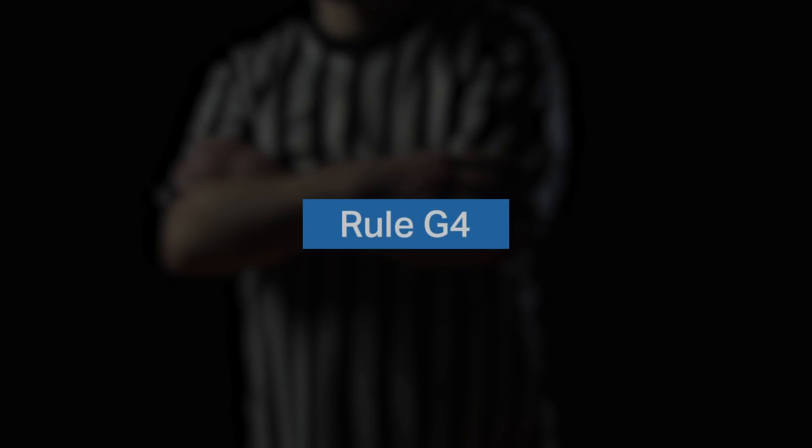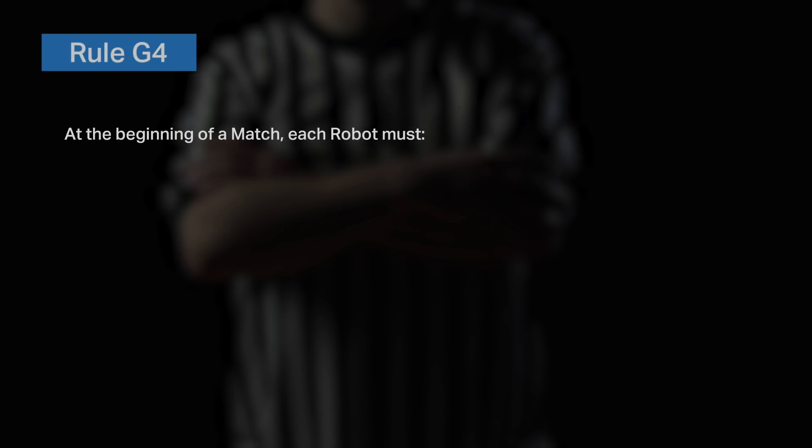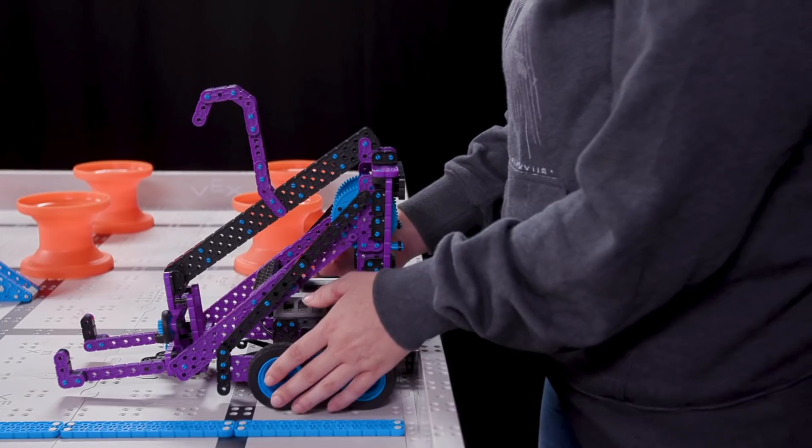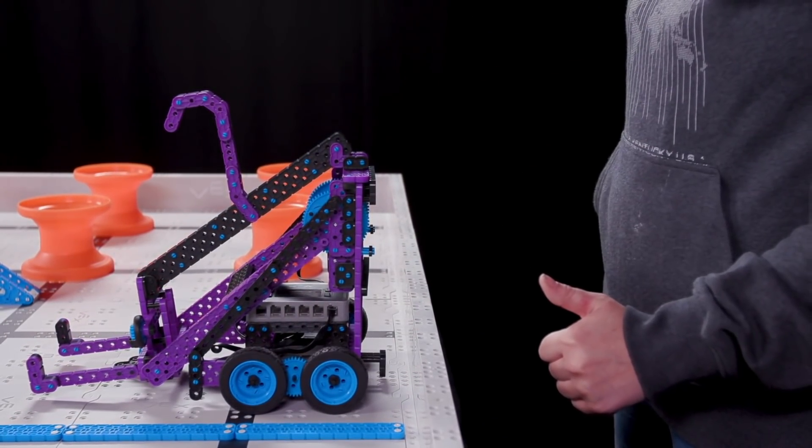In Next Level, Rule G4 states the following. At the beginning of a match, each robot must, one, only be contacting the floor. This is easy. Just make sure the robot isn't touching anything other than the field tiles. Watch for robots touching the field wall.